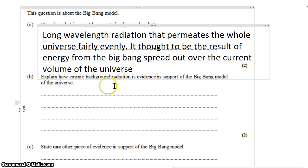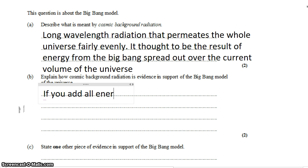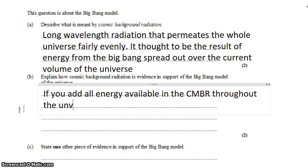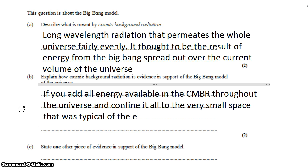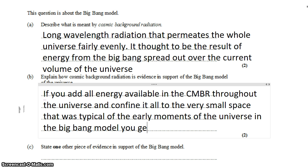Explain how cosmic background radiation is evidence in support of the Big Bang model of the universe. Well, if you add all the energy available in the cosmic microwave background radiation throughout the universe and confine it to the very small region, the very small space that was typical of the early moments of the universe, you get enormous temperatures.